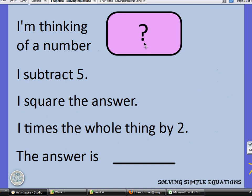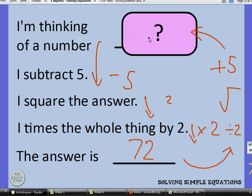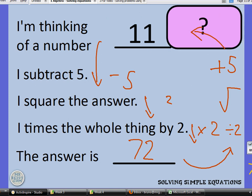One more of these. I'm thinking of a number. I subtract 5, I square that answer and then I times the whole thing by 2, and the answer I get is 72. So to go in reverse order and do the inverse operations each time, I would need to divide by 2 first of all. Then I would need to find the square root and then I would need to add 5. And that will take me back to the start. 72 divided by 2 is 36. The square root of 36 is 6. And then 6 add 5 is 11.